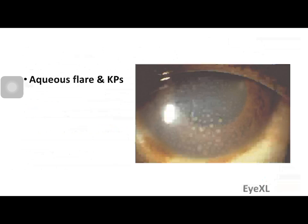Aqueous flare and keratic precipitates occur after permeability increases sufficiently. When vessel permeability increases, proteins leak out into the anterior chamber and appear as a flare — fine particulate matter giving the normally clear anterior chamber a turbid, powdery appearance. Keratic precipitates are exudates deposited on the endothelial side of the cornea.